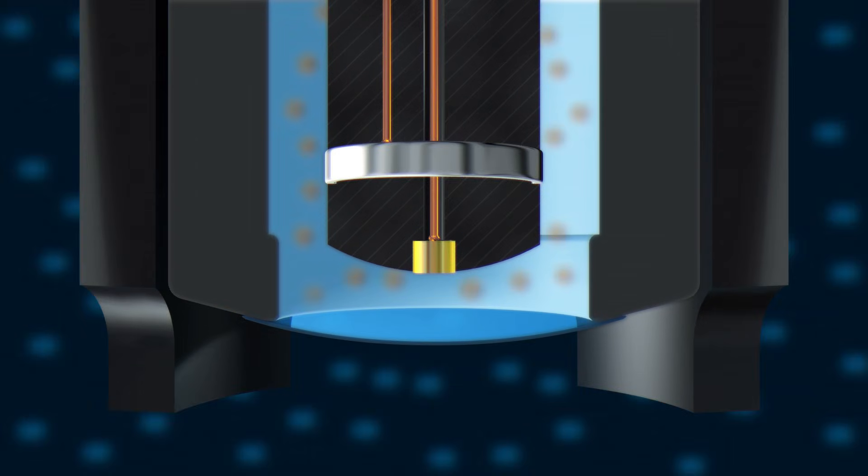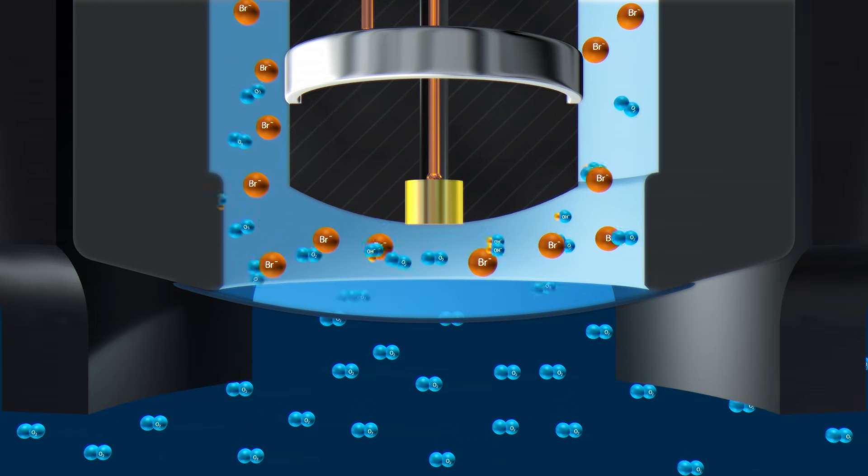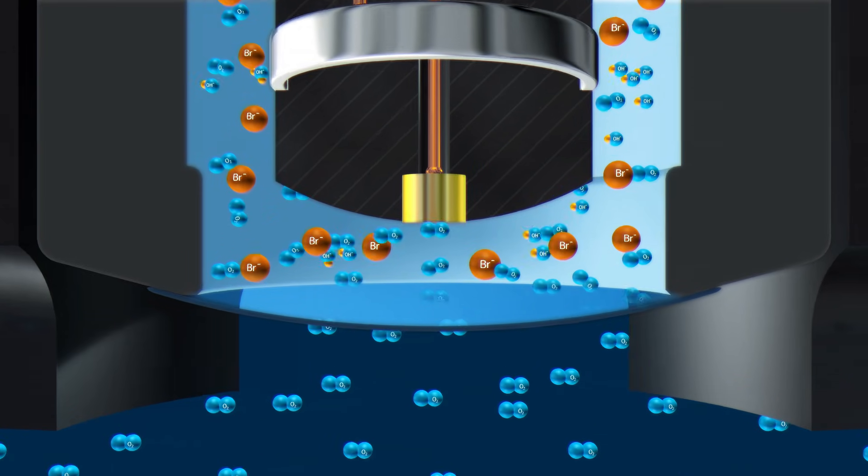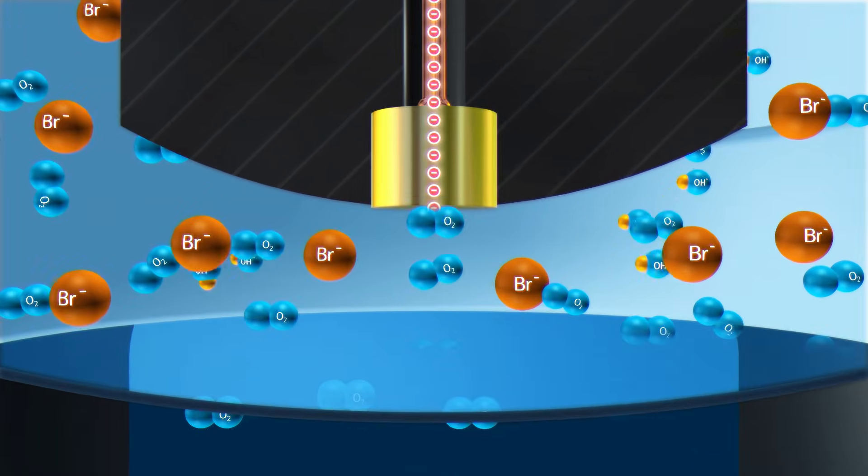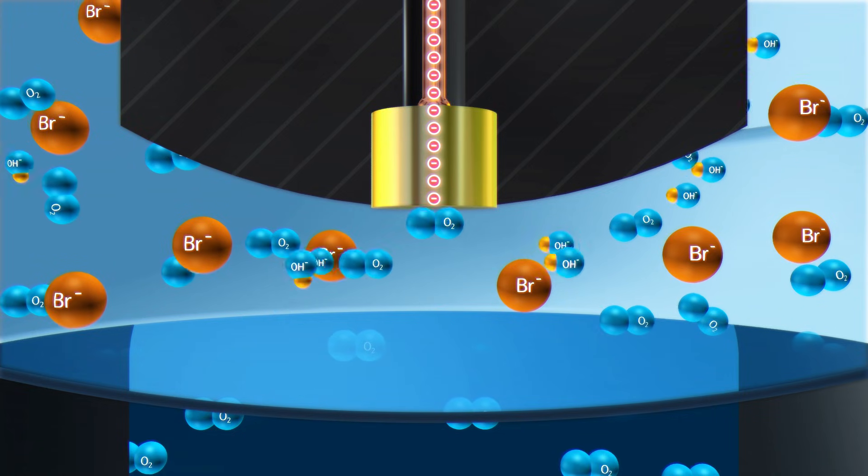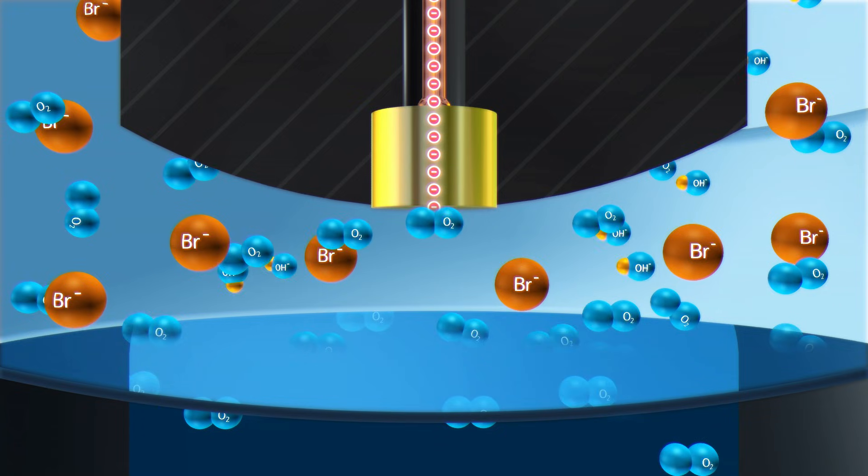When the sensor is immersed in a medium containing oxygen, the difference in the partial pressure of oxygen between the inner and outer membrane walls leads to the diffusion of oxygen through the membrane. The diffused oxygen is reduced at the gold cathode in the reaction chamber, resulting in a current flow that is proportional to the amount of transformed oxygen.